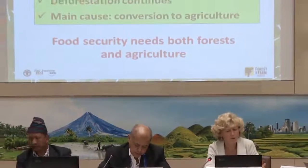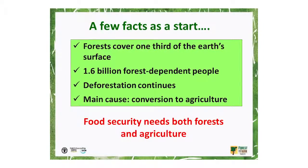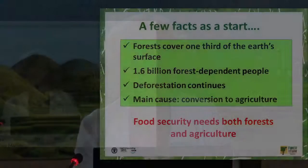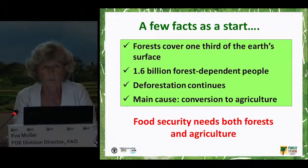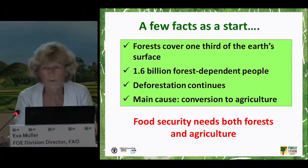Many of you probably already know this. Forests cover one-third of the Earth's surface. At the same time, there are about 1.6 billion people — and this is an estimation — who depend on forests for their livelihoods. Deforestation continues at a fairly high rate of 13 million hectares per year, and the main cause of deforestation is conversion to agriculture. So we have a conflict: forest-dependent people who need forests for food security on one side, and deforestation to gain grounds for agriculture on the other. We believe that food security needs both forests and agriculture.